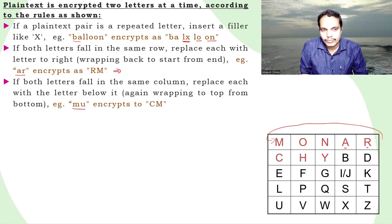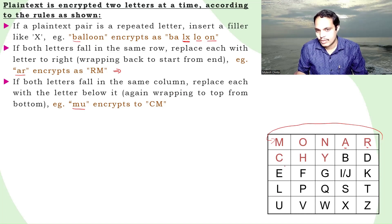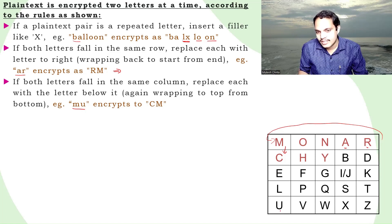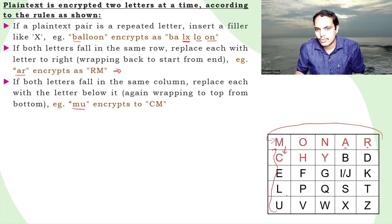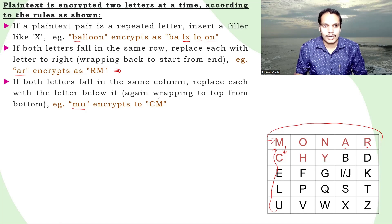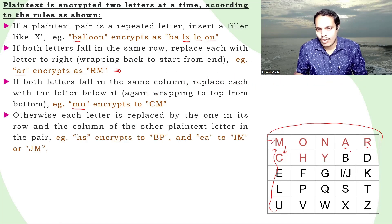The third rule: if both letters fall in the same column, replace each with the letter below it, wrapping around if necessary. For example, M and U are in the same column. M is replaced with the letter below it, which is C, and U has nothing below it so it wraps back to M. So M-U encrypts to C-M.